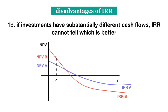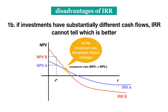We can graph the net present values of these investments at different discount rates. The rate at which NPV is zero is our IRR. The rate at which we would be indifferent between the two investments — that is, the rate that yields the same NPV for both — is known as our crossover rate.